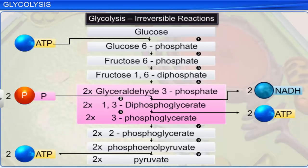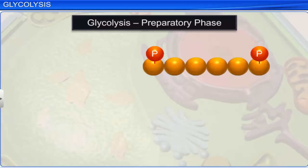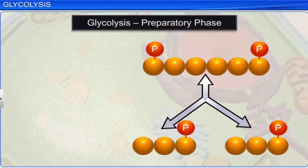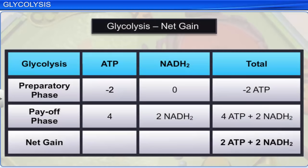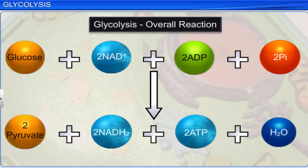Of the 10 reactions, the 3 involving glucose, fructose-6-phosphate, and phosphoenol pyruvate as substrates are irreversible, while the others are reversible. As two molecules of PGAL are formed from fructose-1,6-biphosphate, the reactions in the payoff phase will occur two times, once for each PGAL. The preparatory phase utilizes two ATP molecules to break down glucose, while the payoff phase yields four ATP molecules and two NADH2 molecules. Thus, the net gain from a single molecule of glucose in the glycolysis process is two ATP and two NADH2.